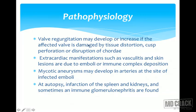Valve regurgitation may develop or increase if the affected valve is damaged by tissue distortion, cusp perforation, or disruption of chordae tendineae. Extracardiac manifestations such as vasculitis and skin lesions are due to emboli or immune complex deposition. Mycotic aneurysms may develop in arteries at the site of infected emboli. At autopsy, infarction of the spleen and kidneys and sometimes immune glomerulonephritis can be found.